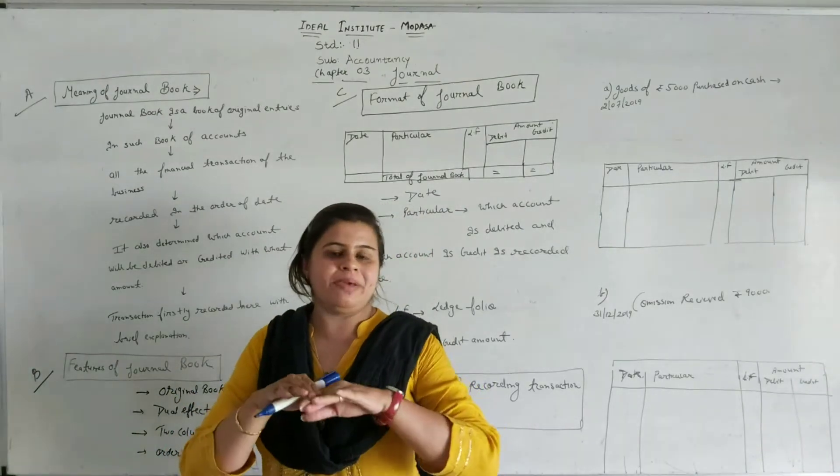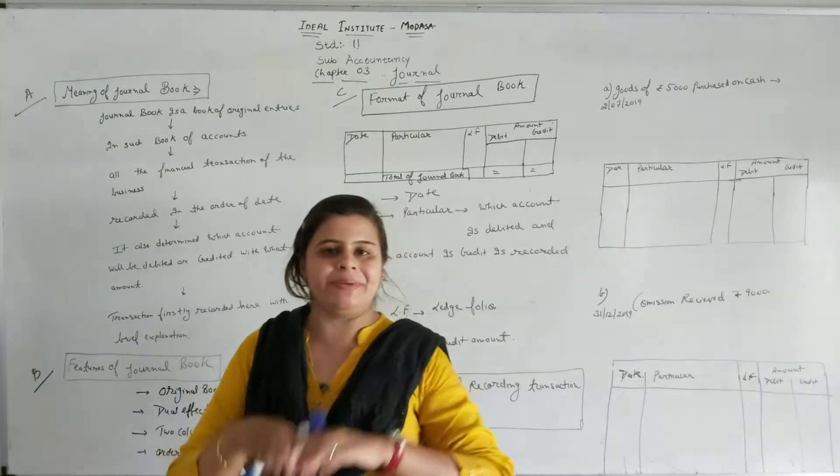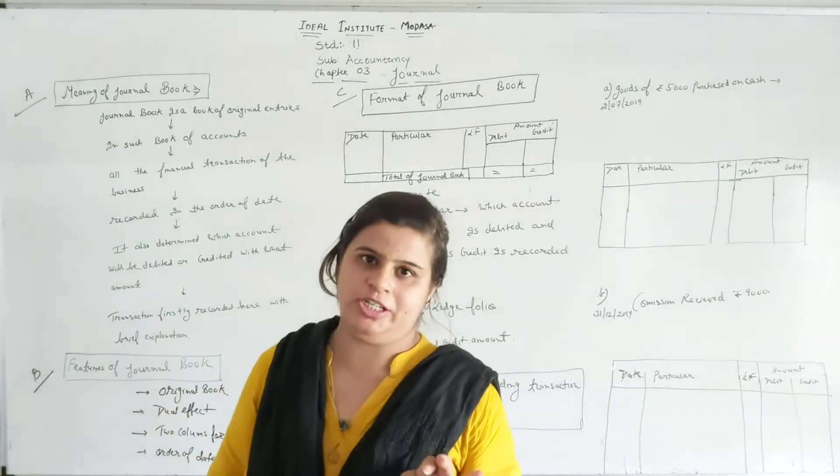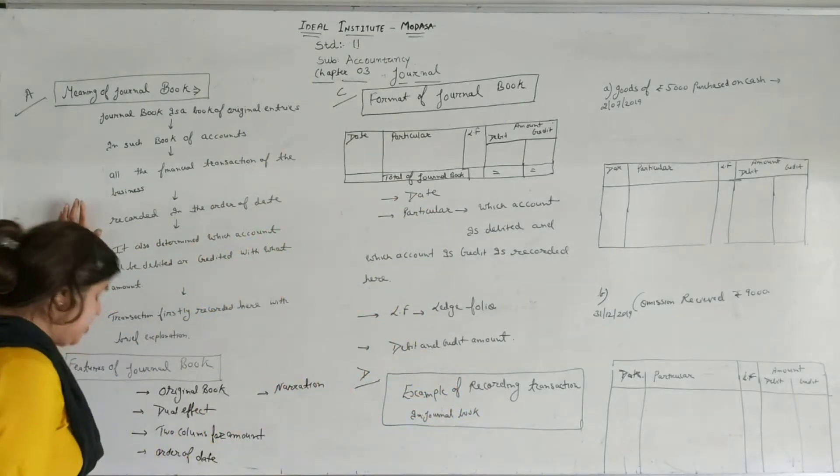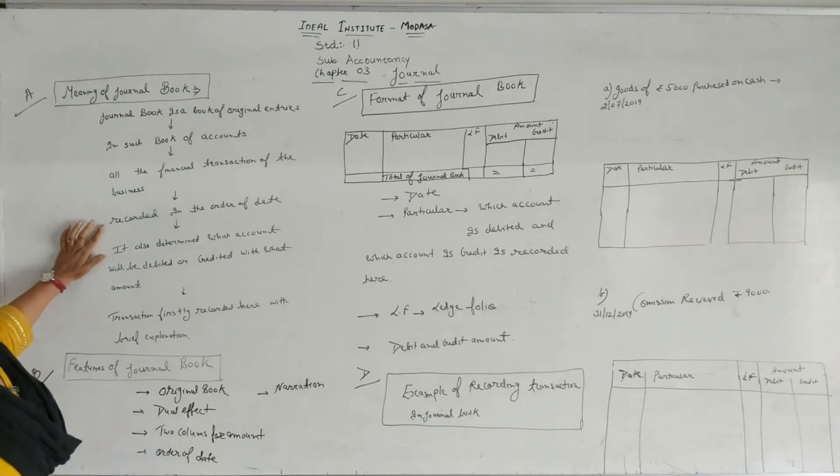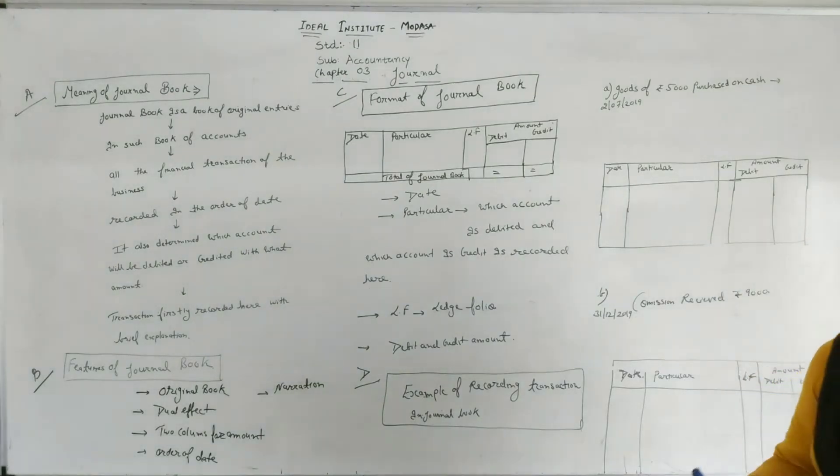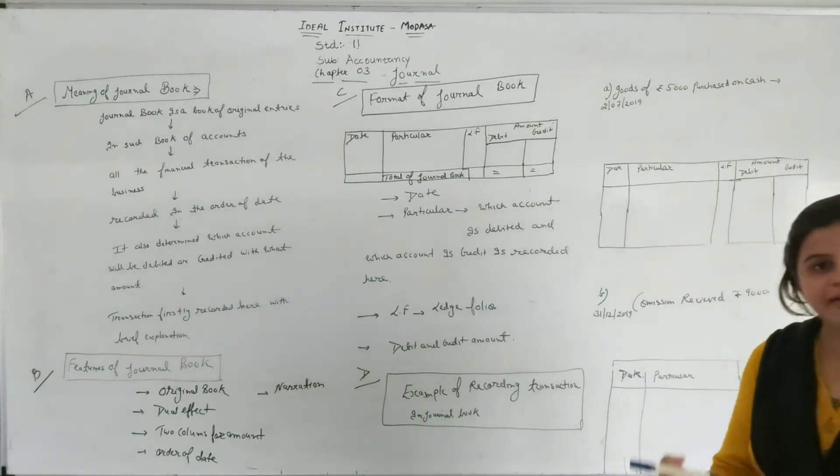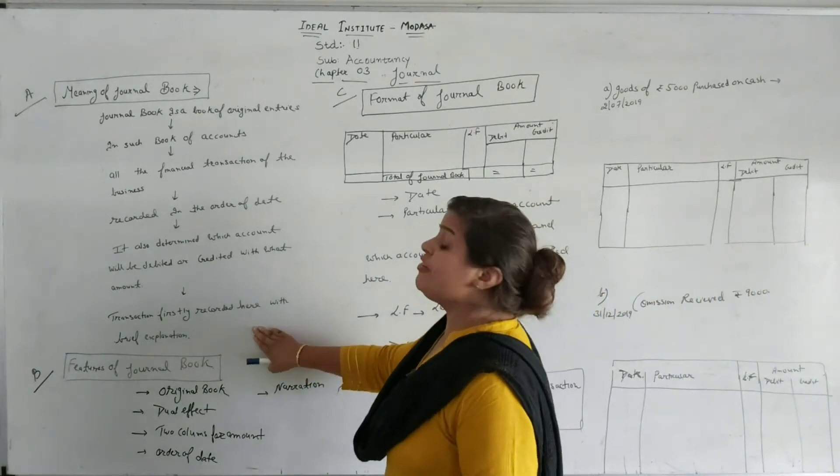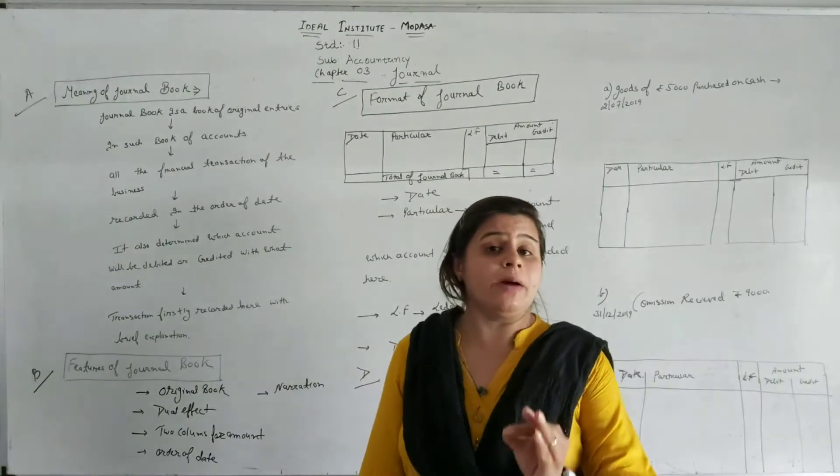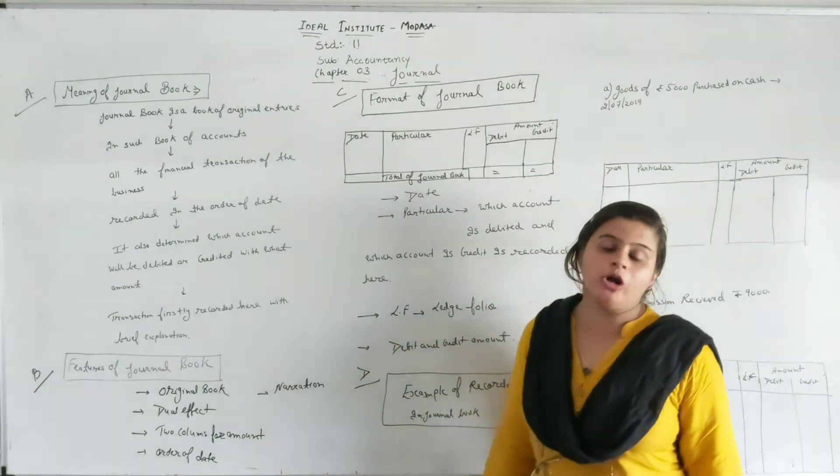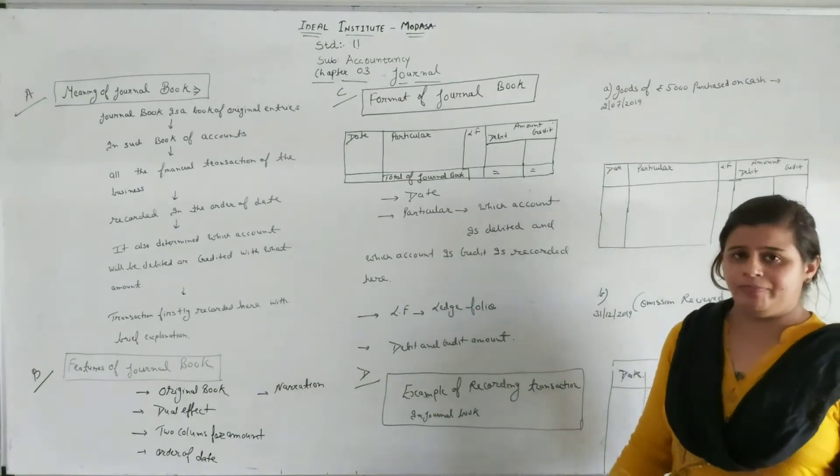For example, you have given me a book, I have not given any payment. In return, I have appreciated and thanked you. So this is a non-financial transaction. We will record financial transactions, recorded in the order of date. It is also determined which account will be debited and credited with what account. This is a book that will help us identify and record which account debit and credit. And the transaction is firstly recorded here with brief explanation. This is a book that is the first time the business transaction is recorded with brief explanation.